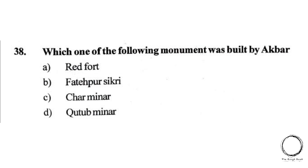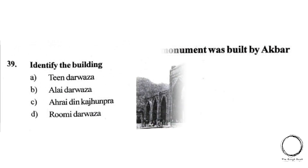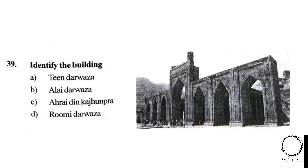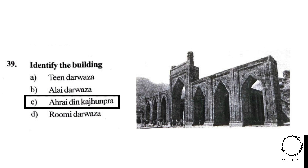Moving on: identify the building shown in the image. Options: A) Teen Darwaza, B) Alai Darwaza, C) Adhai Din Ka Jhonpra, D) Rumi Darwaza. The right answer is C, Adhai Din Ka Jhonpra.